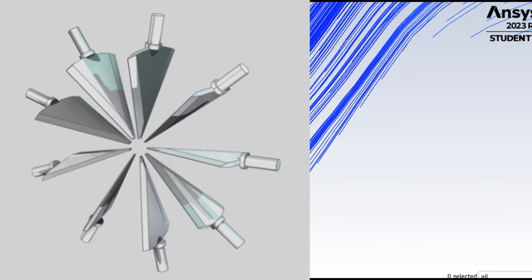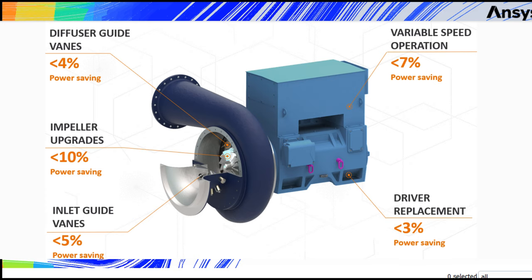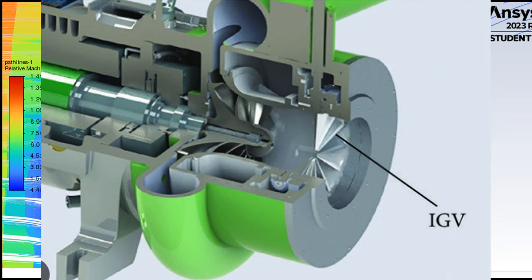Inlet guide vanes, IGV or inlet diffuser. An optional component, it is in charge of controlling the flow of gas entering the impeller, improving the compressor's efficiency across different operating conditions.